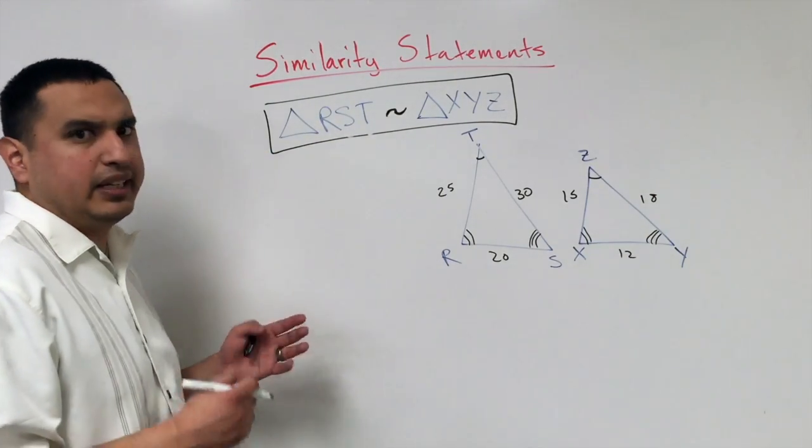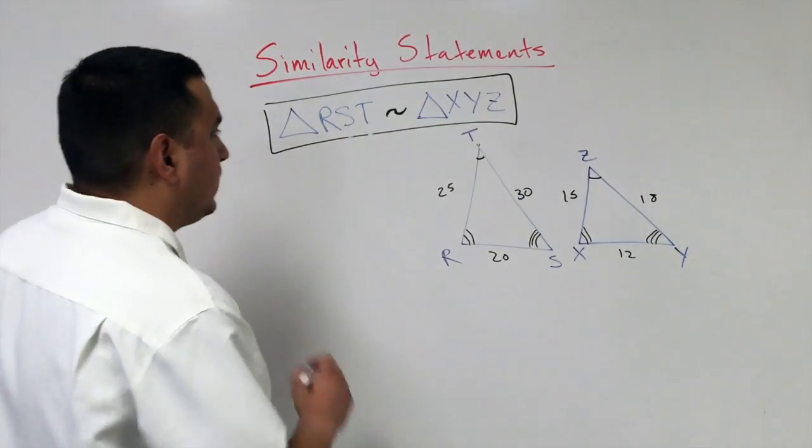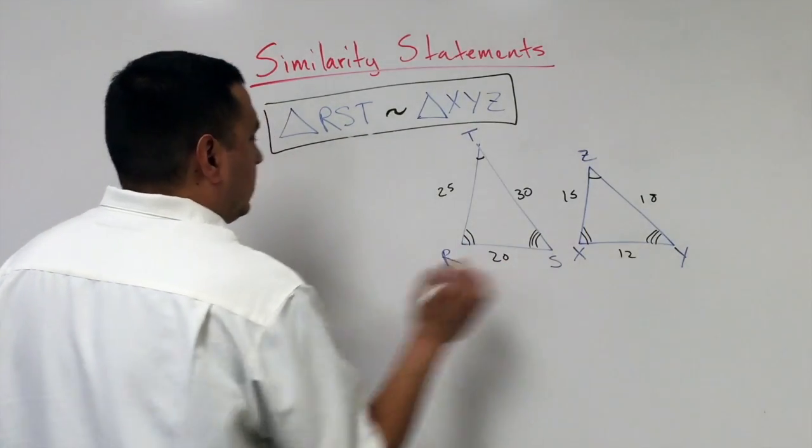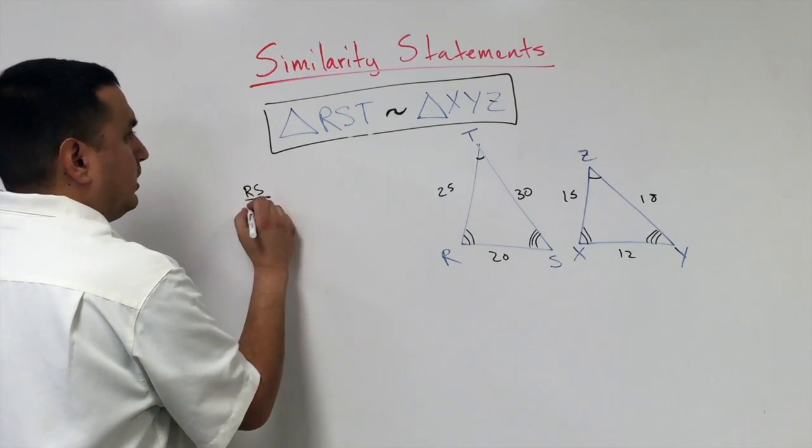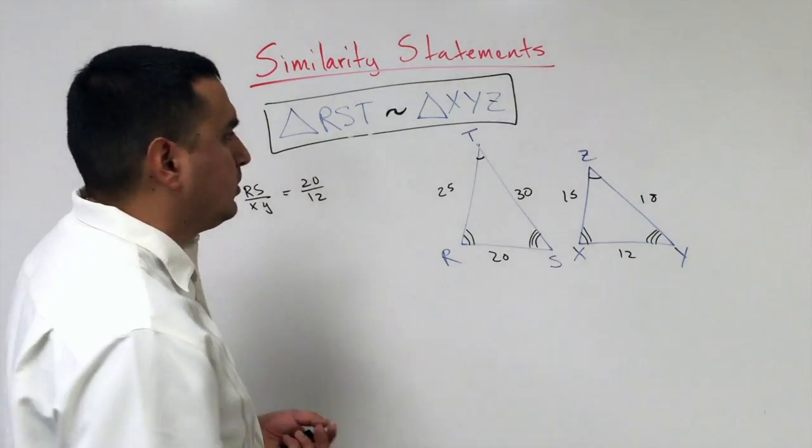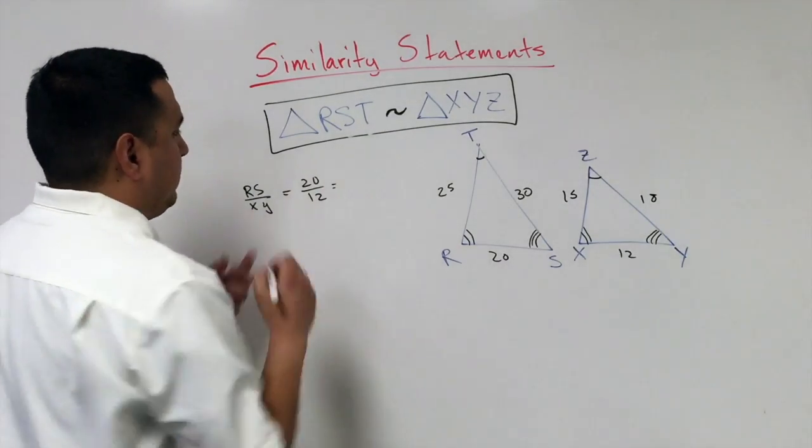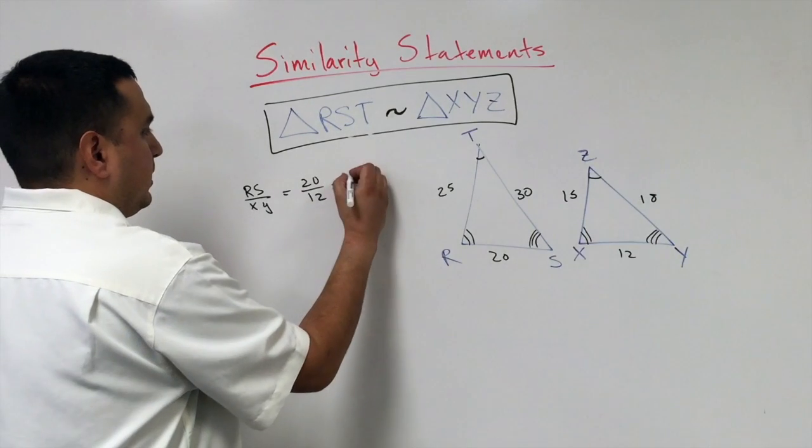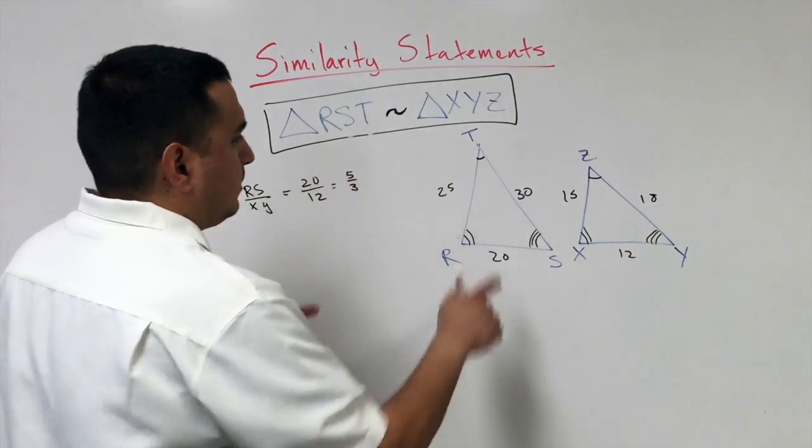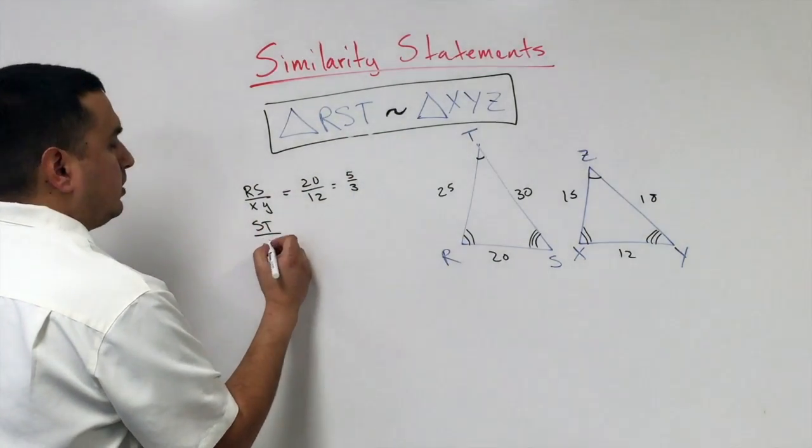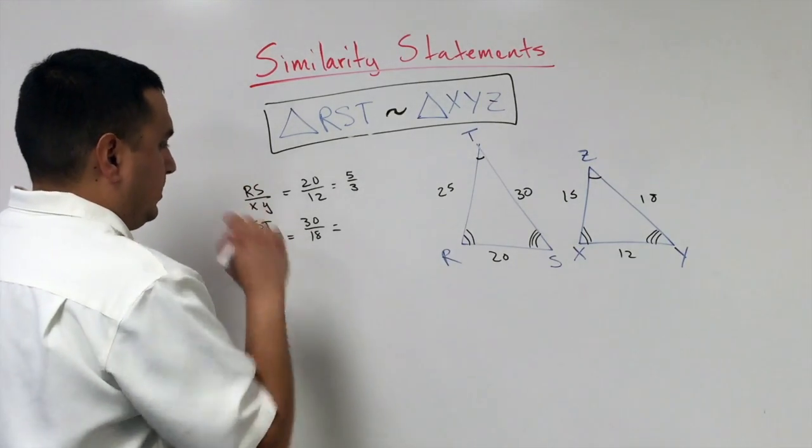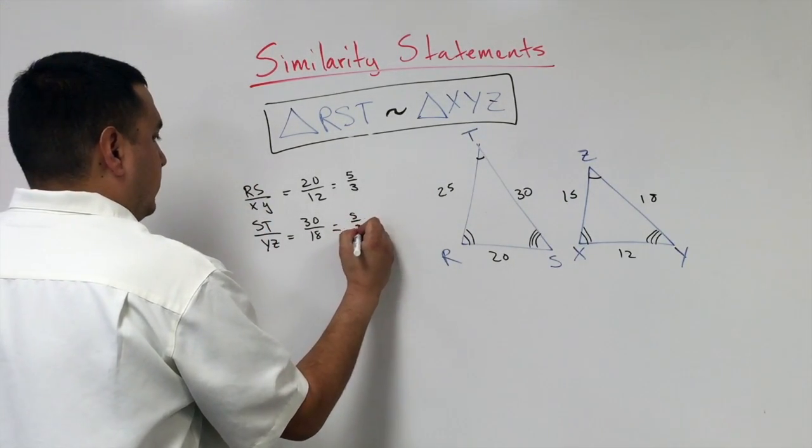RS over XY is 20 over 12. If I reduce this by dividing by 4, that gives me 5 thirds. If I take ST over YZ, that's 30 over 18. If I reduce that to lowest terms, I also get 5 thirds.